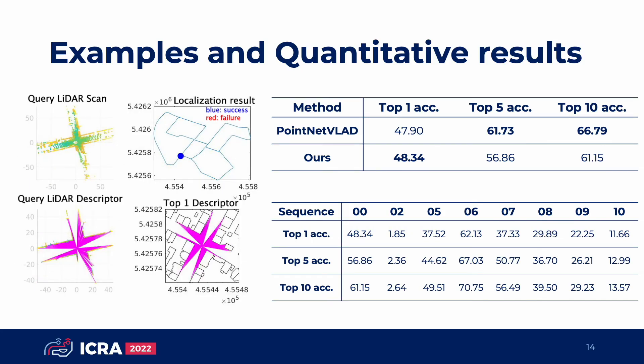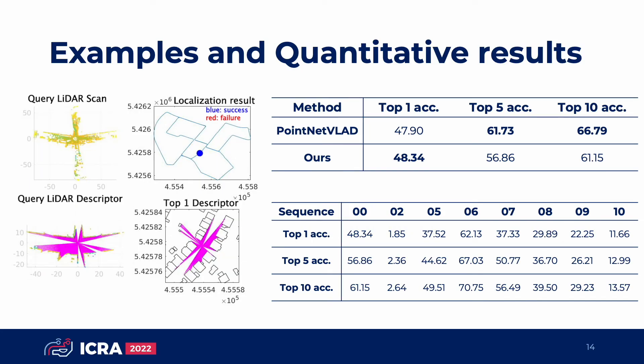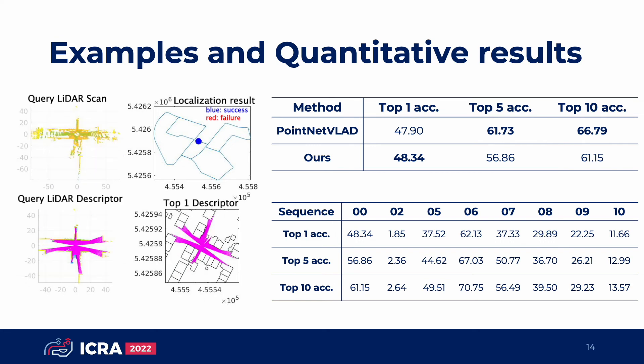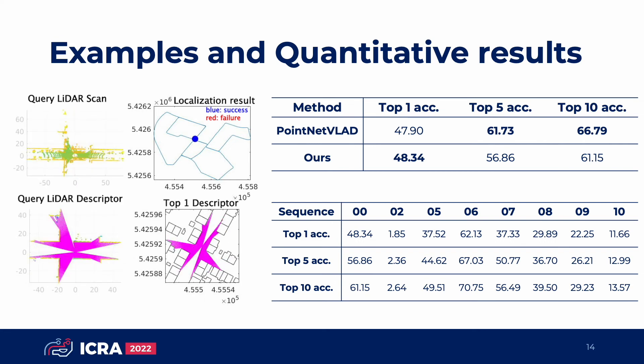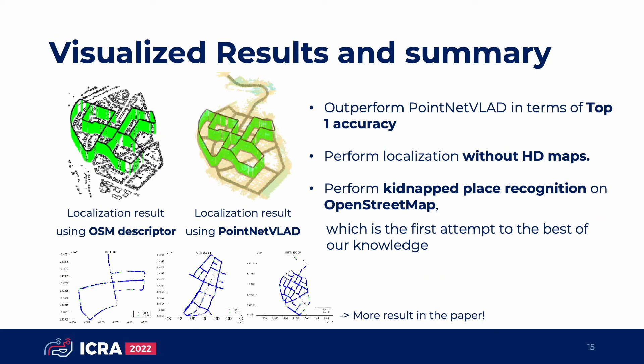You can see the matching performance on the left side and quantitative results on the right side. To summarize, we outperformed PointNet++ in terms of top-1 accuracy. Also, it is the first attempt to perform LiDAR-based place recognition on OpenStreetMap, to the best of our knowledge. There are more results of 12 sequences of KITTI and KITTI-360 dataset in the paper.